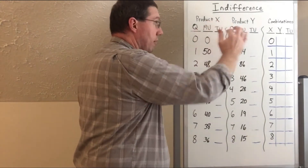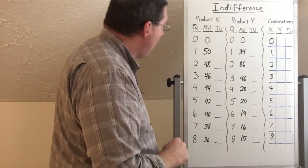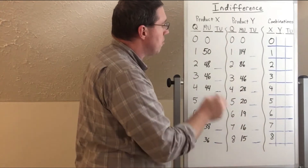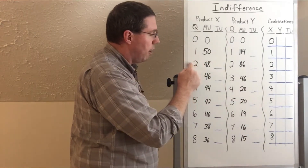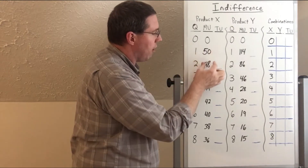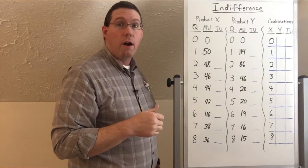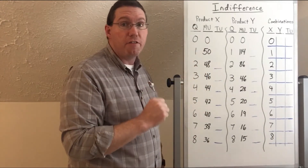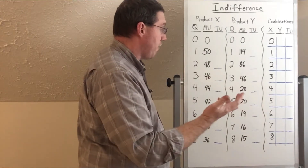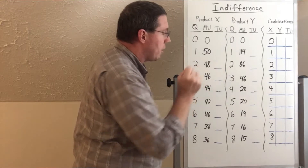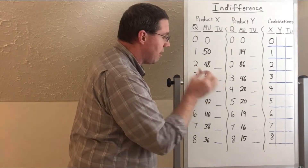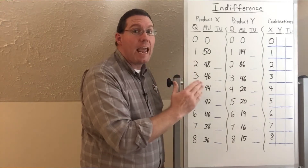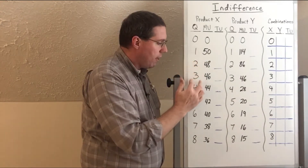So here's what we have once again: product X and product Y. Now as we increase the quantity consumed of each product, you can see that each subsequent unit gives us a little bit less utility. So let's say they're hot wings. Our first hot wing gives us 50 units of satisfaction, the second wing gives us 48, the third gives us 46, then 44, 42, and 40.